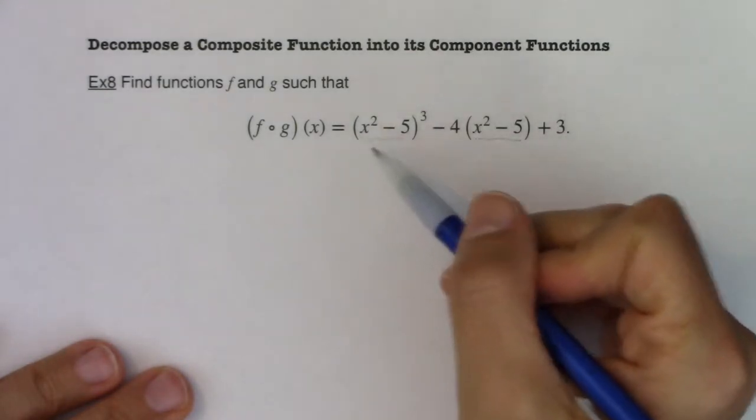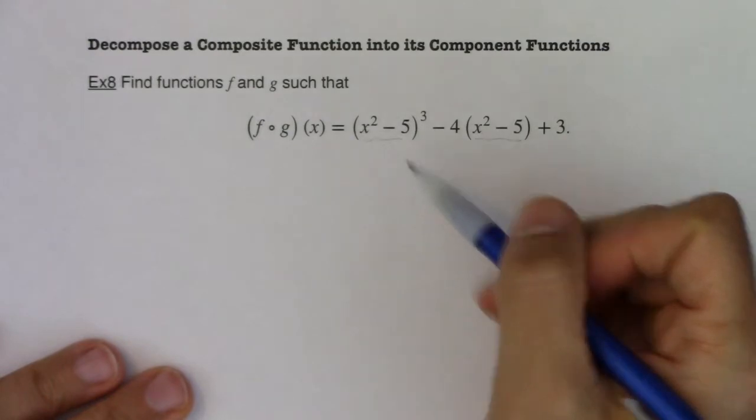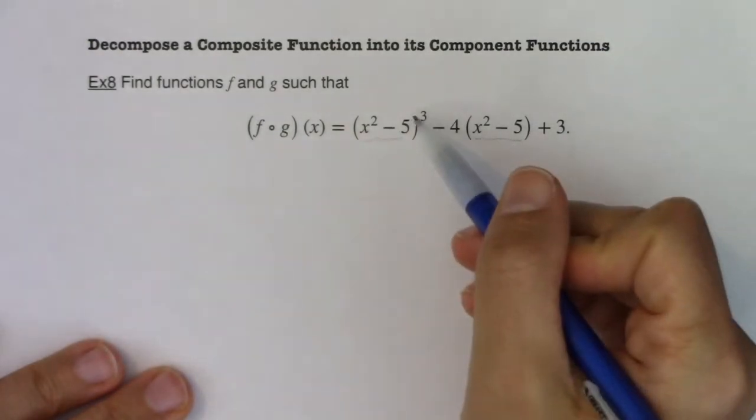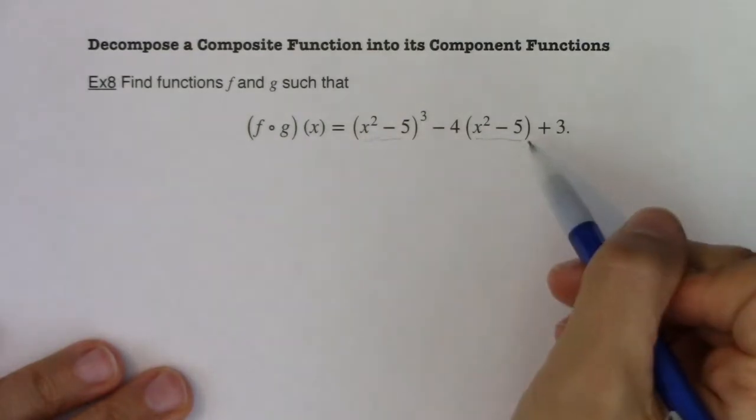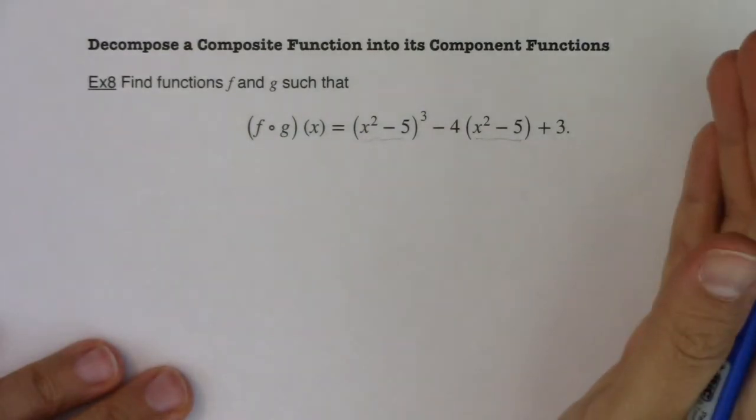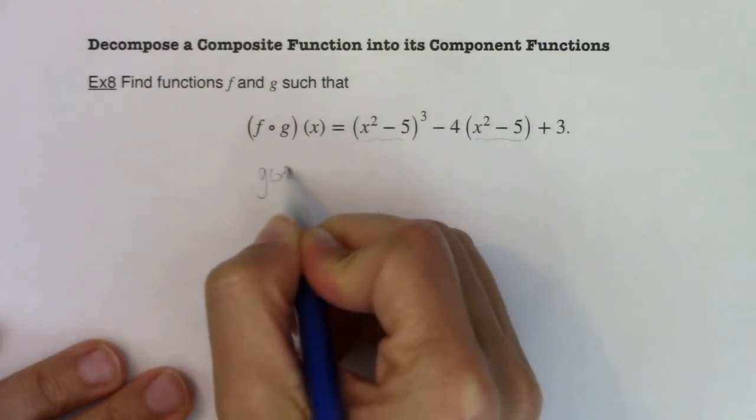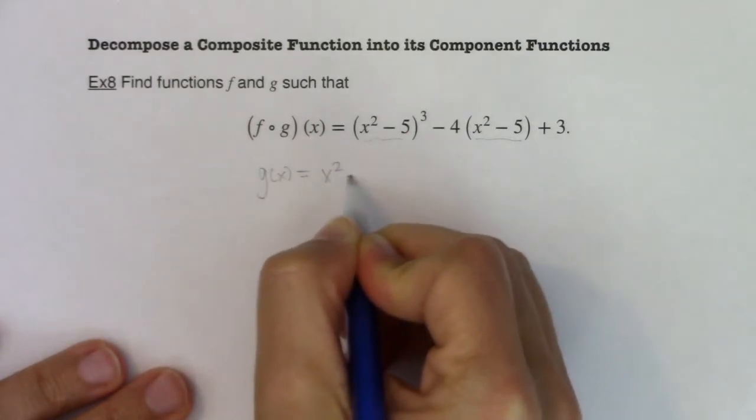So you see those inside parentheses, and that's a clue as to what your inner function will be. Things that are inside grouping symbols tend to go with your inner function. So I'm going to just start you and say, I think g of x is x squared minus 5.